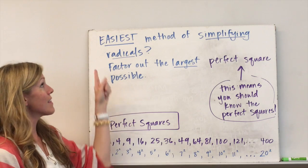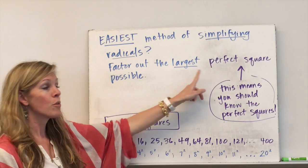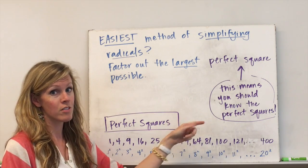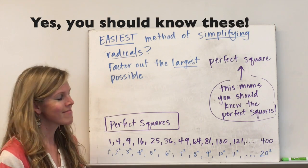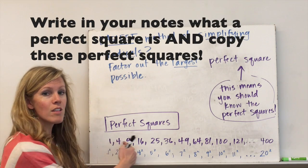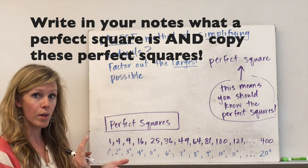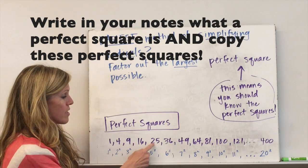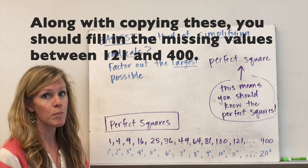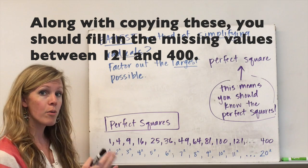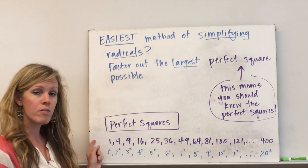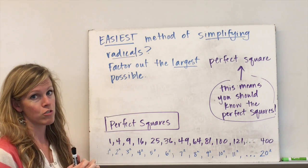The easiest method of simplifying radicals is to try and find the largest perfect square factors possible. So factoring out the largest perfect square means you should know your perfect squares. Perfect squares basically means 1 squared is 1, 2 squared is 4, 3 squared is 9 — these numbers have a whole number square root. So 1, 4, 9, 16, 25, 36, 49, and so on. I would strongly recommend that you know your perfect squares up to 20, so you can recognize when they might be factors of the radicals you're trying to simplify.